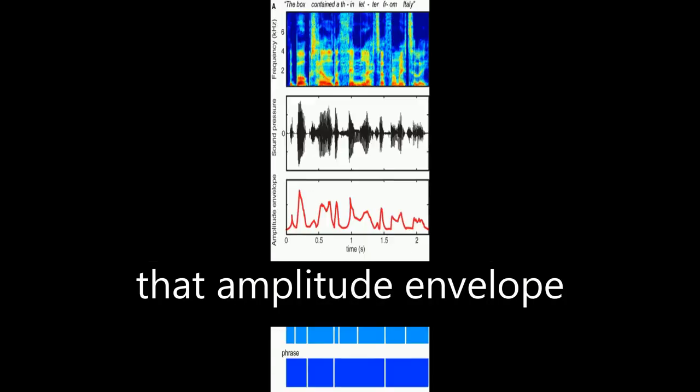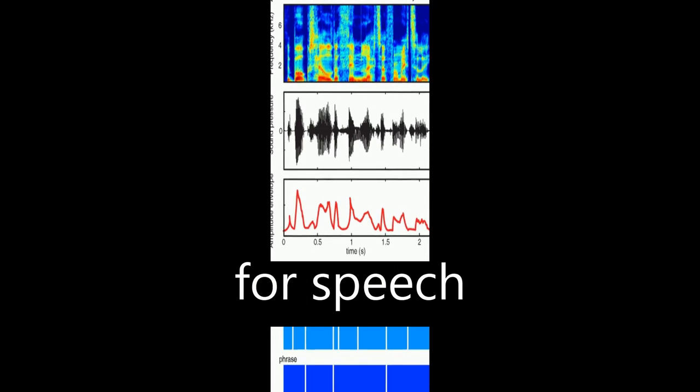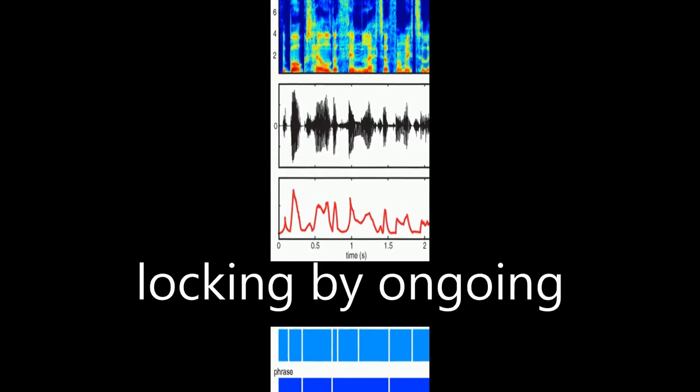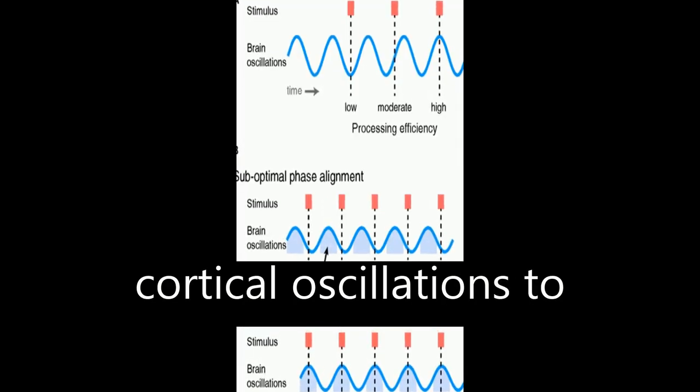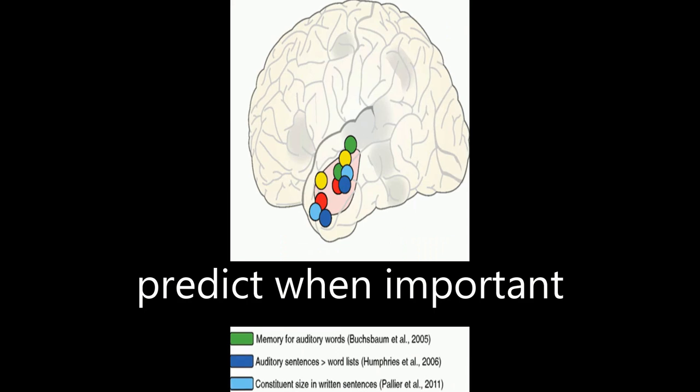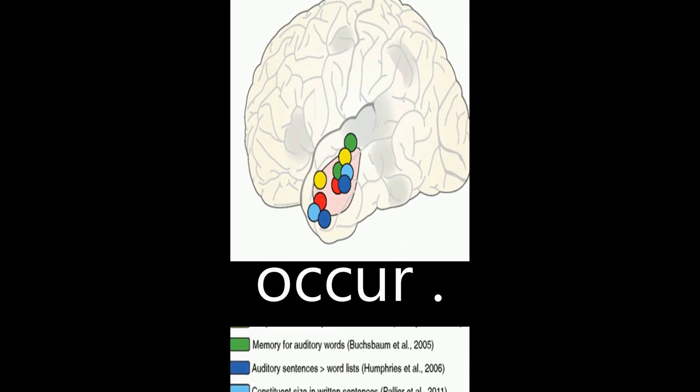Behavioral studies show that amplitude envelope information is crucial for speech intelligibility, while neuroimaging data suggests that phase locking by ongoing cortical oscillations to low frequency information, 4 to 8 hertz, in the speech envelope helps listeners predict when important events are likely to occur.